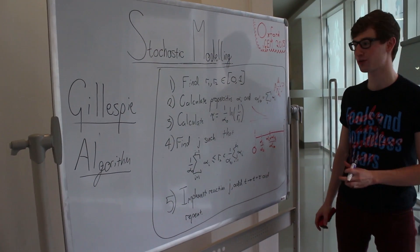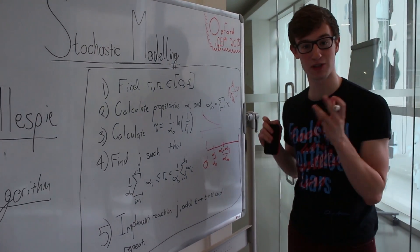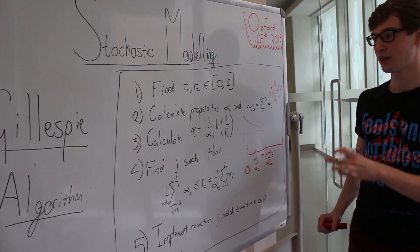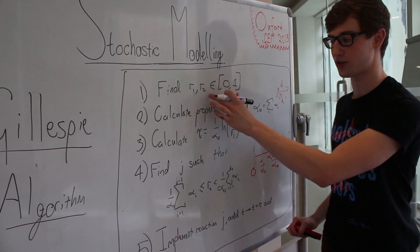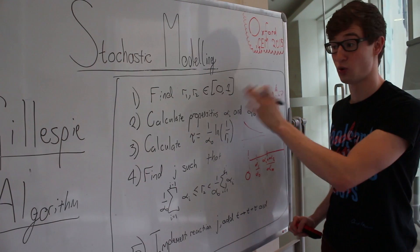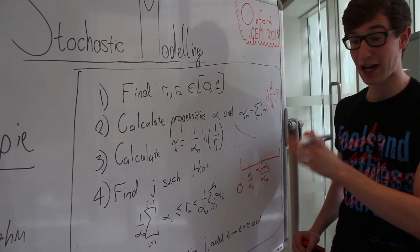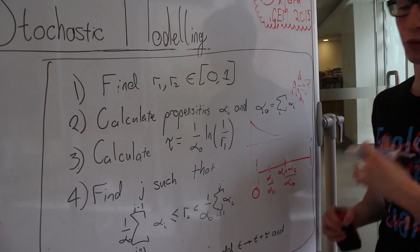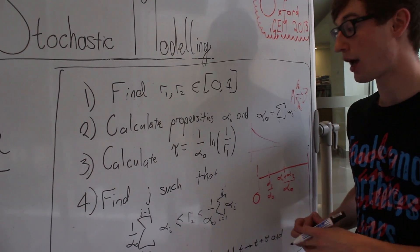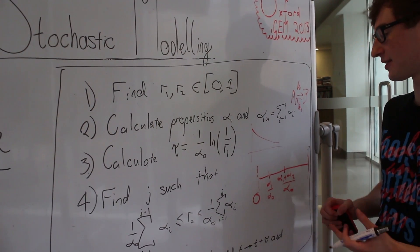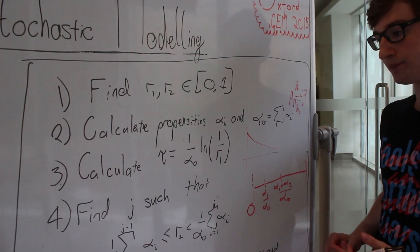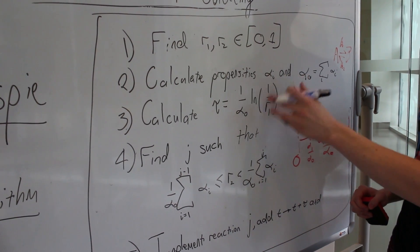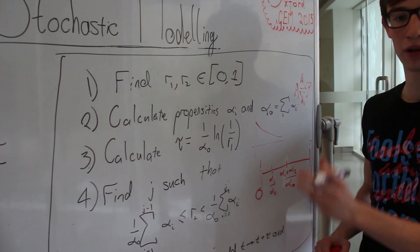So here it is, the Gillespie algorithm in full. I've written it out in pretty much pseudocode so that you could go into your favorite computer software package and implement this straight away. There are five steps. The first one, as we said, was to find two random numbers R1 and R2, and they must be uniformly distributed in the range 0 to 1. The second thing we do is we calculate all of the propensities related to the reactions that are possible. So I've labeled them alpha i. One of them before was K1A, the other was K2B. And we also need to find alpha 0, which is the sum of all of these propensities. So in this case, K1A plus K2B. Once we've done that, we then need to calculate time tau, which as we said was 1 over alpha 0 times the natural log of 1 over R1, which is the time that it took for that reaction to occur.